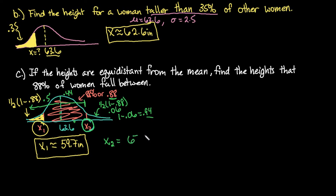So we ended up with 67.5 inches. So women between the heights of 59.7 and 67.5, 88% of our women fall between these two heights.